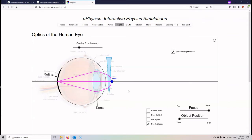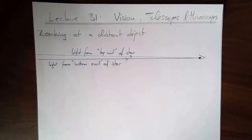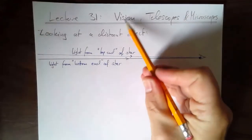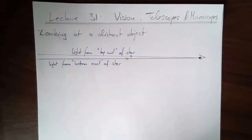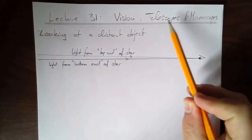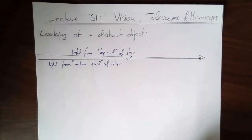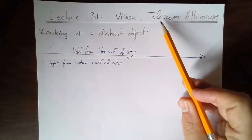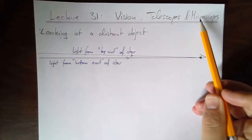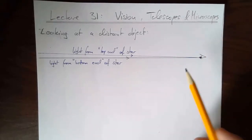That is vision - just an application of the simple lenses we know about. Now we're going to talk about telescopes and microscopes. They're both for magnification but of very different things: telescopes for things very far away, microscopes for tiny things that are close.